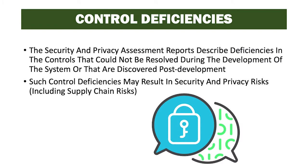The security and privacy assessment reports describe deficiencies in the controls that could not be resolved during the development of the system or that are discovered post-development. Such control deficiencies may result in security and privacy risks, including supply chain risks. So we determined during our assessment that there were controls that were not implemented correctly, and in this task we're going to remediate some of those findings.